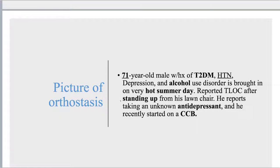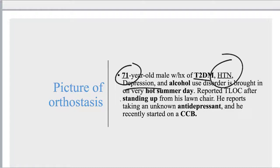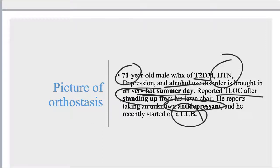The classical clinical vignette of orthostatic syncope is a 71-year-old patient with type 2 diabetes — causing peripheral neuropathy and dehydration — who also has hypertension mostly when supine, is depressed and taking an antidepressant, drinks alcohol daily, and on a hot summer day when extra dehydrated, loses consciousness after standing up. He is taking an antidepressant and recently started a calcium channel blocker.